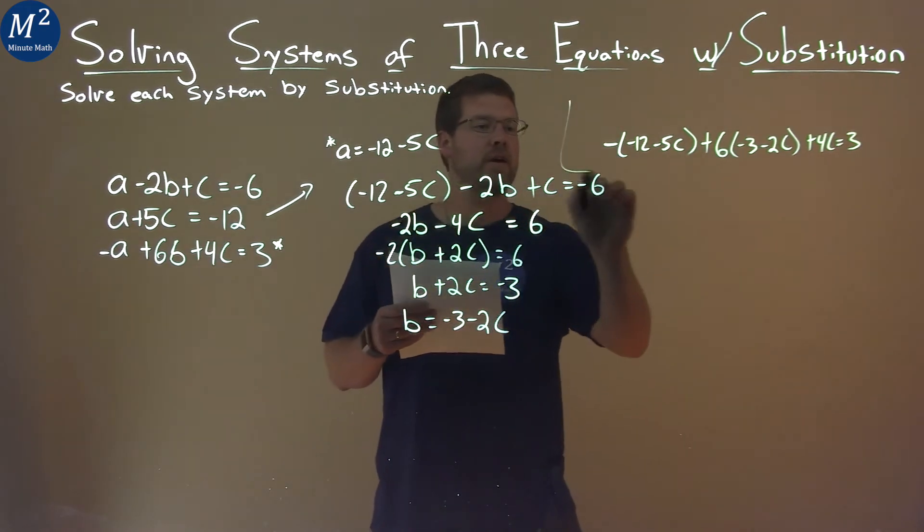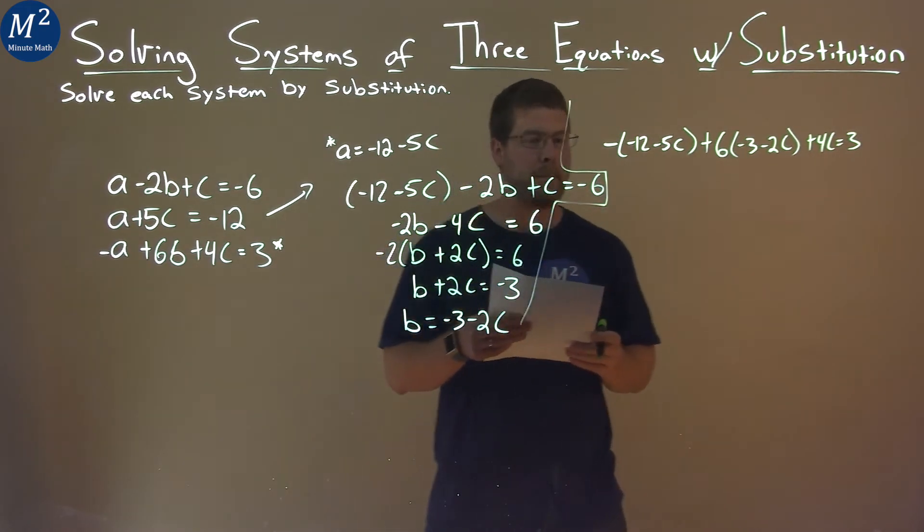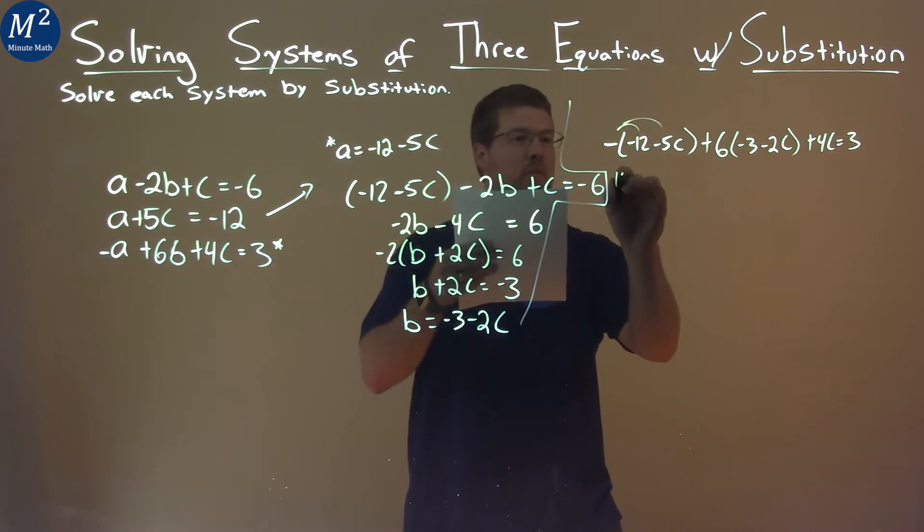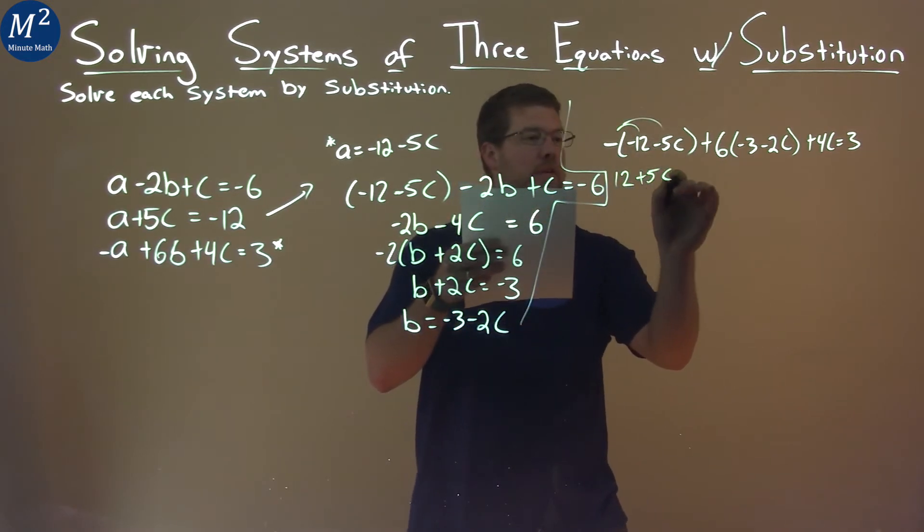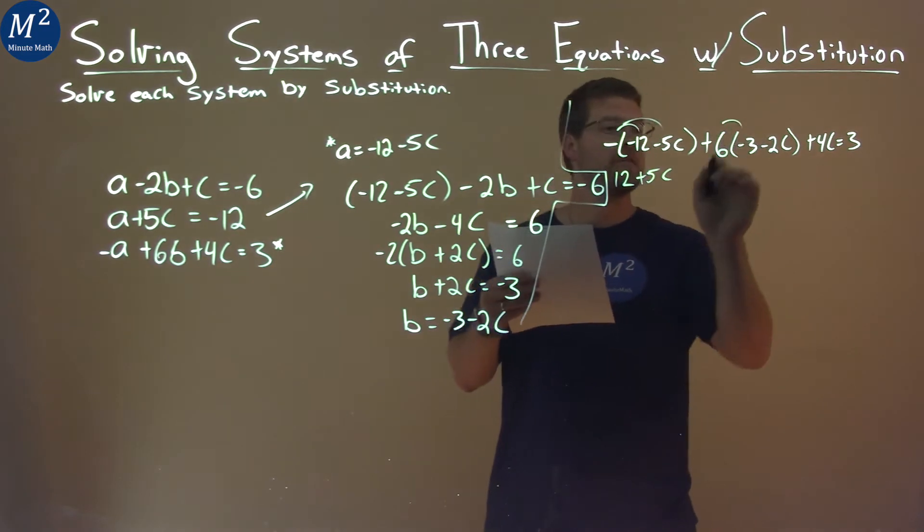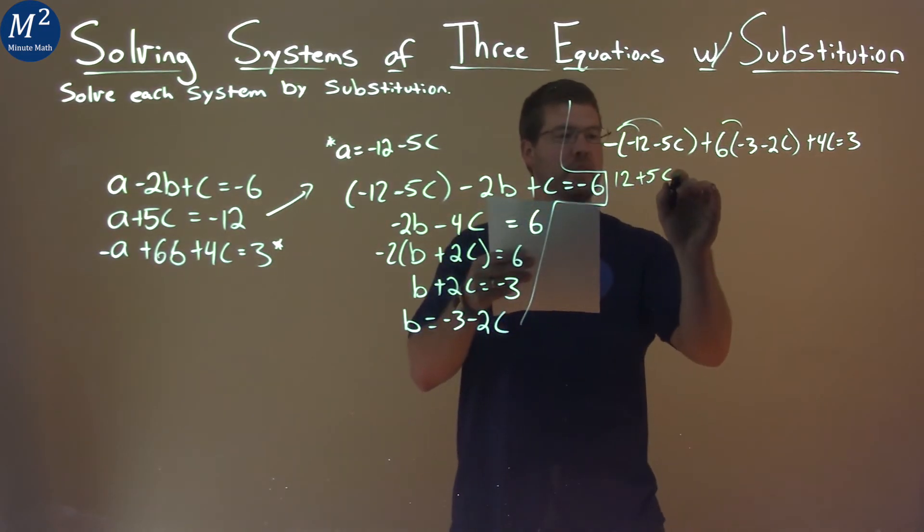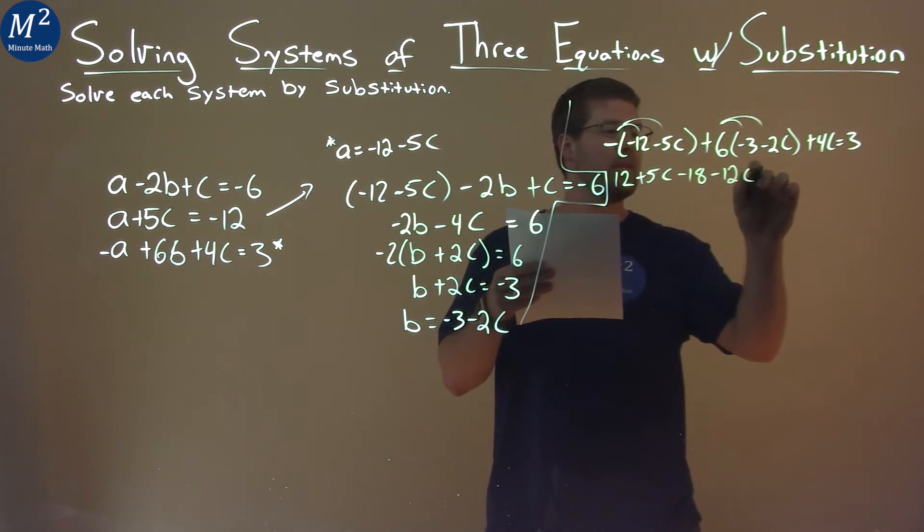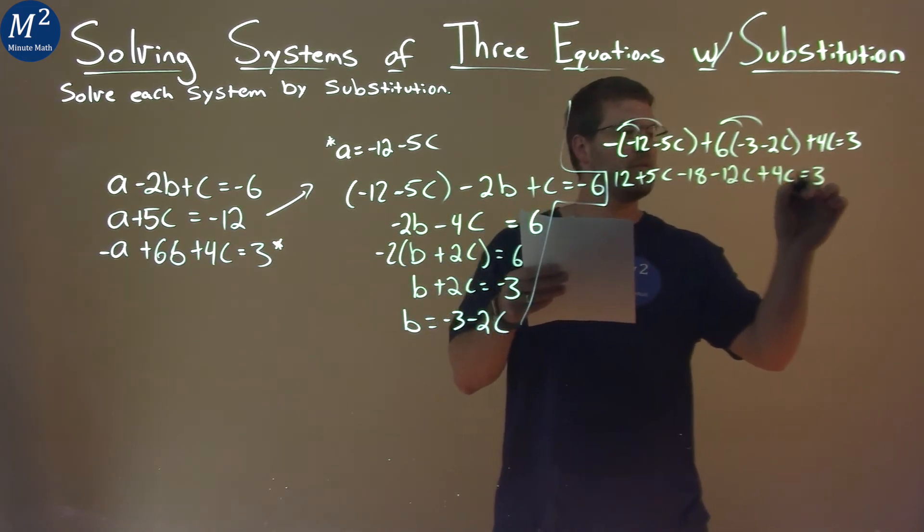And now, let's simplify that. Distribute the negative sign to both parts, and we have positive 12 plus 5C. Then, distribute the 6. We have, well, 6 times negative 3 is minus 18. 6 times negative 2C is minus 12C. Then, we add 4C, and that's equal to 3.